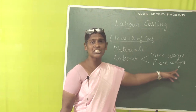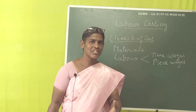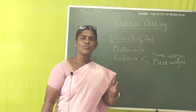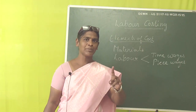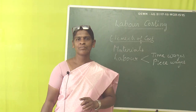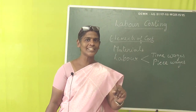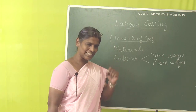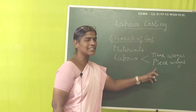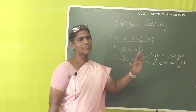The other major type is piece wages. Under piece wages, we calculate wages based on how many pieces of work the worker has completed. For example, for assembling one table he is paid 100 rupees. If in a day he assembled 8 tables, we pay him 8 × 100 = 800 rupees. When wages are determined by the number of pieces of work done, that is called piece wages.